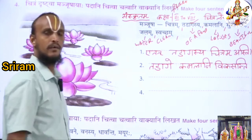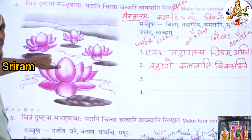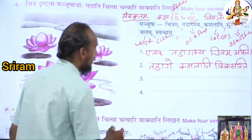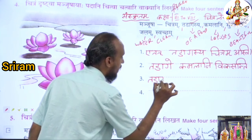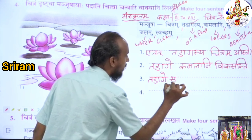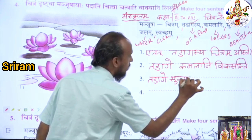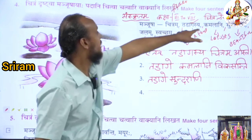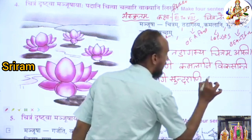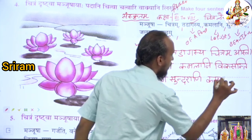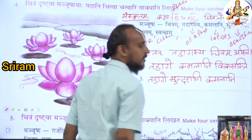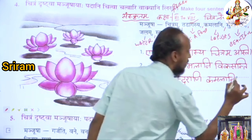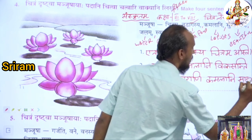So many beautiful lotuses are there in this pond. How can you write this? Listen: 'Thadage Sundarani Kamalani Shanti.' You have to end with a verb — that is Shanti — because it is plural.